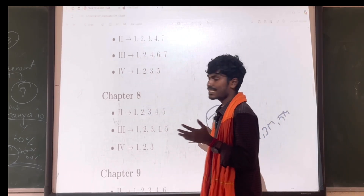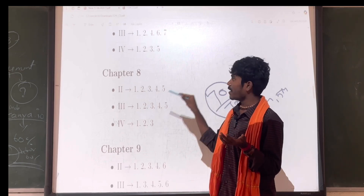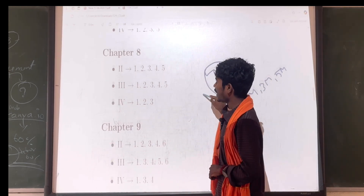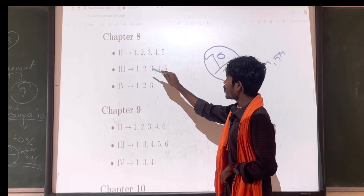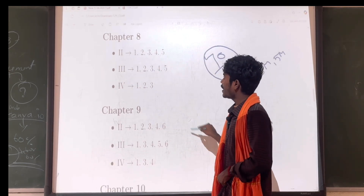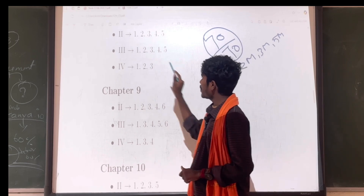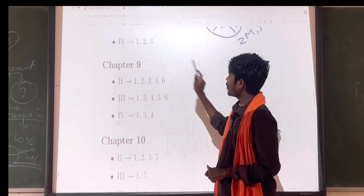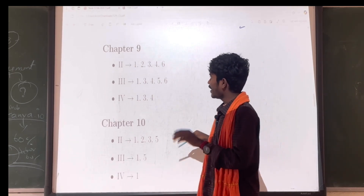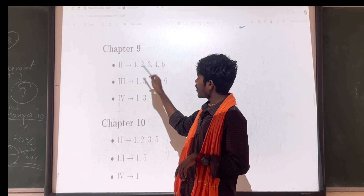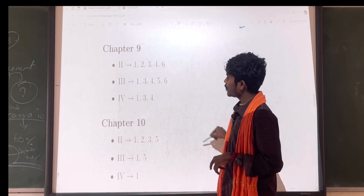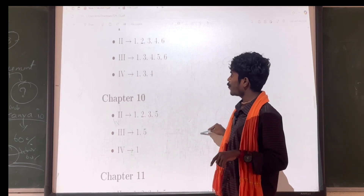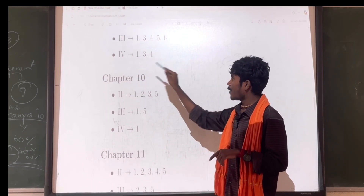Chapter 7 continued: 3 mark questions — 1, 2, 4, 6, 7. 5 mark questions — 1, 2, 3, 5. Chapter 8: 2 mark questions — 1, 2, 3, 4, 5. 3 mark questions — 1, 2, 3, 4, 5. 5 mark questions — 1, 2, 3, 4, 5.